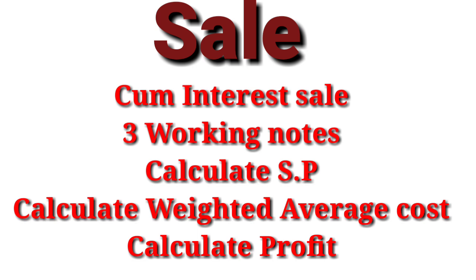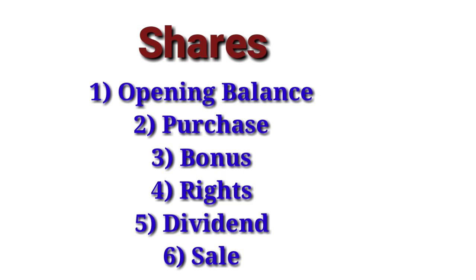To summarise: for purchase there are two transaction types — ex-interest and cum-interest. Ex-interest purchase requires no working note; cum-interest purchase requires one working note. For sale, ex-interest requires two working notes and cum-interest requires three working notes. That is the base framework for bonds and debentures.